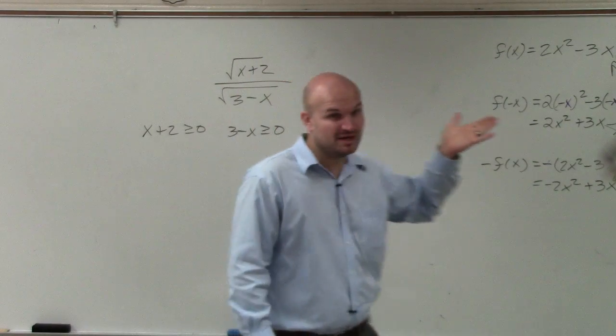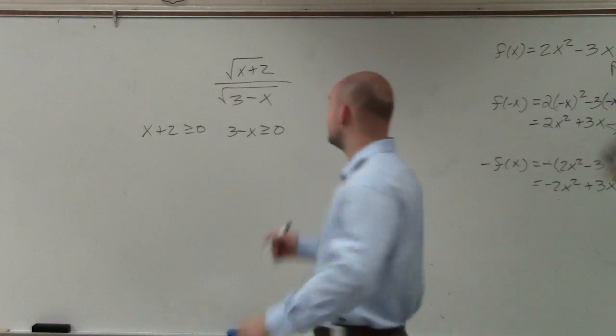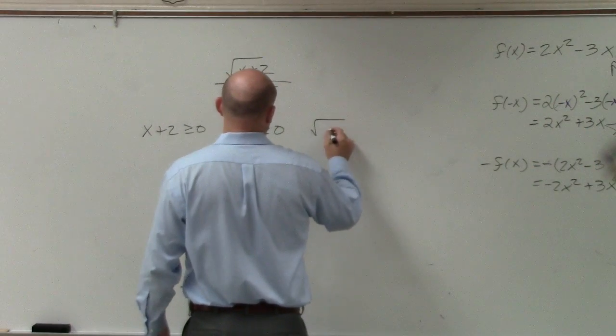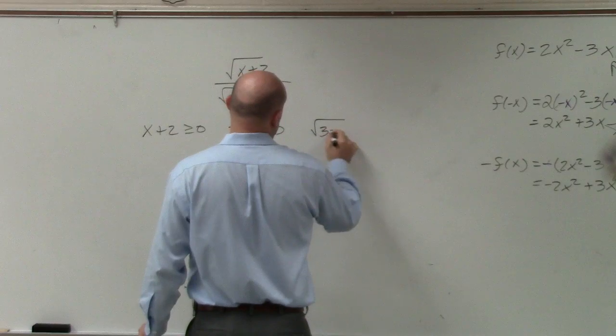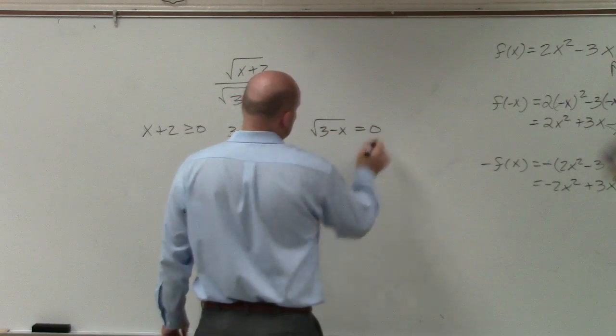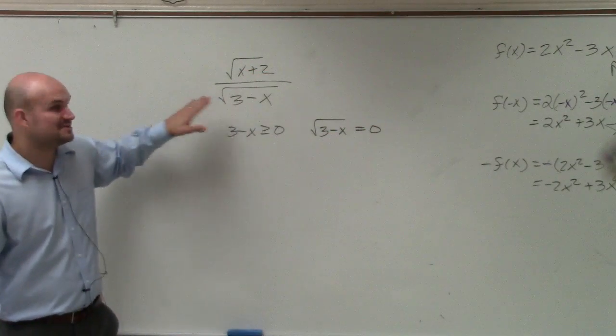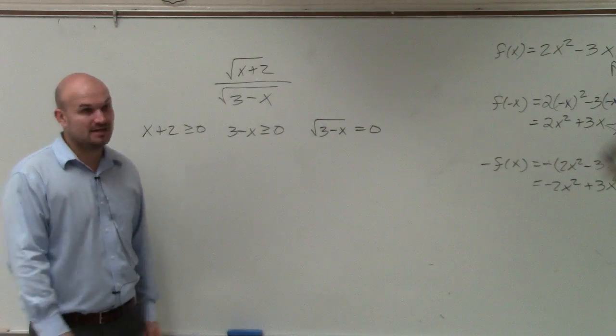Right. So therefore, that cannot equal 0. So we write square root of 3 minus x equals 0. Whatever values make that equal 0 are also not going to be in the function.